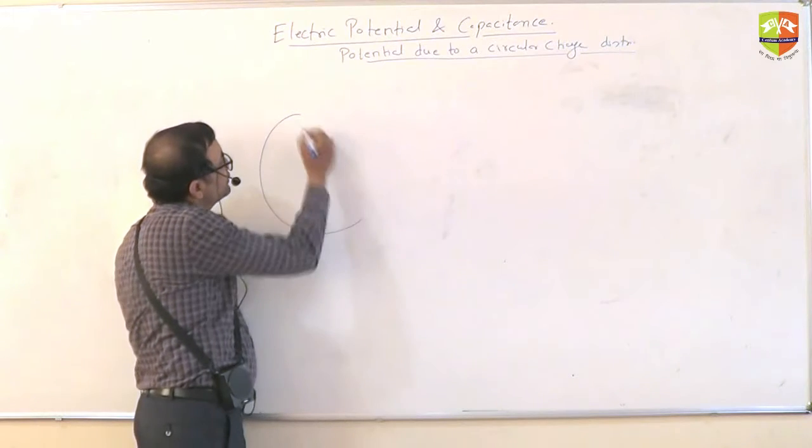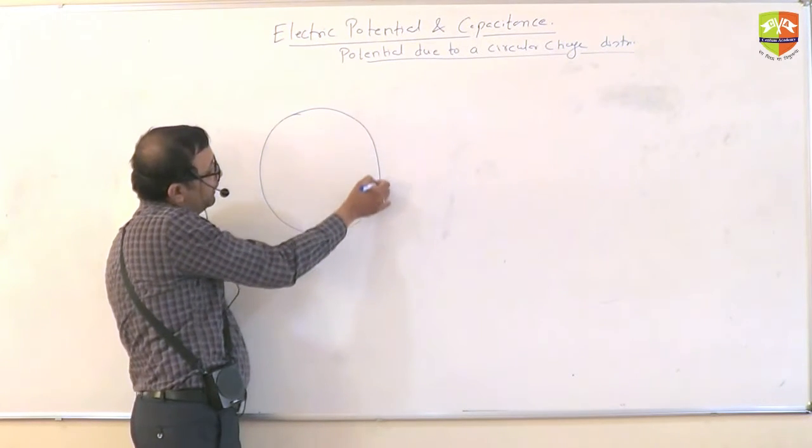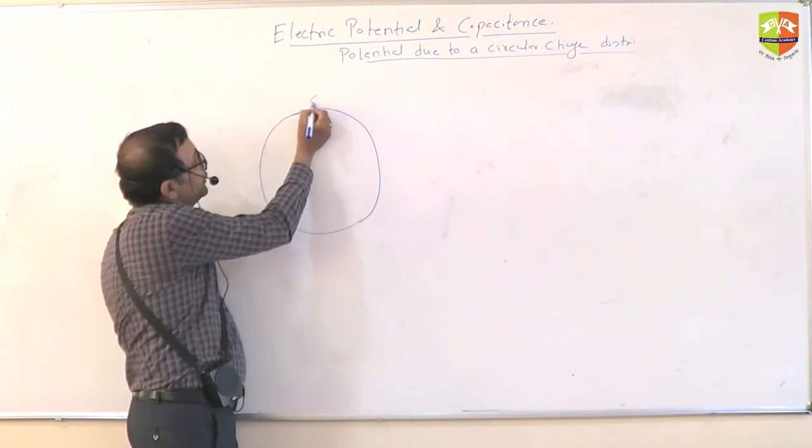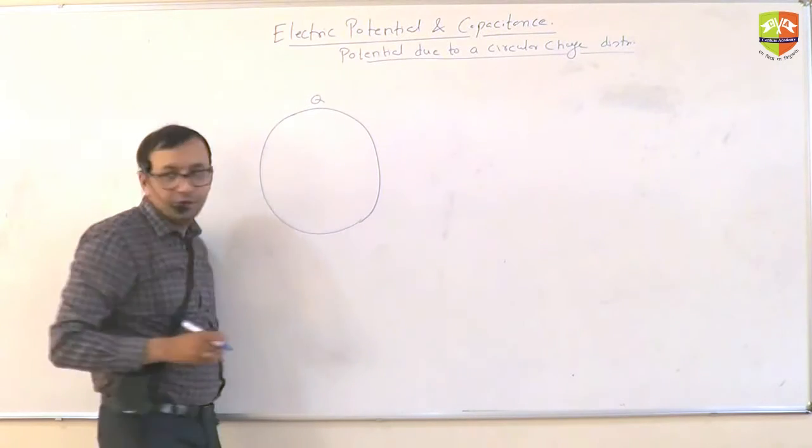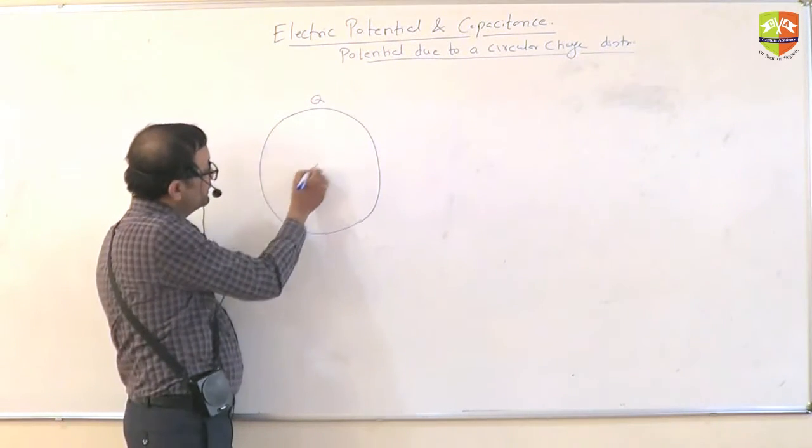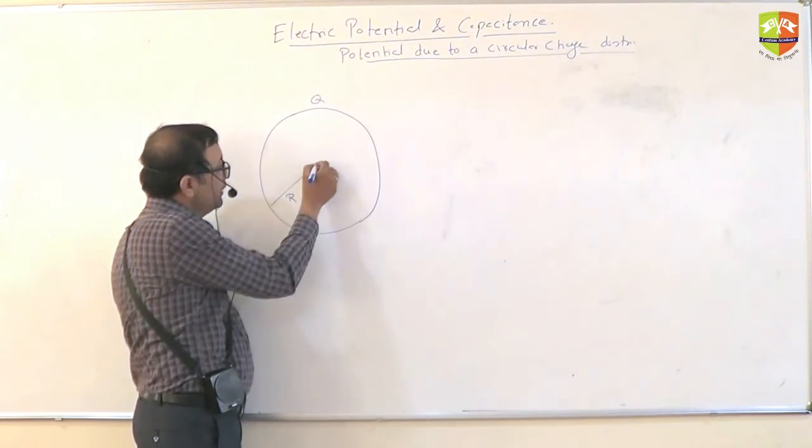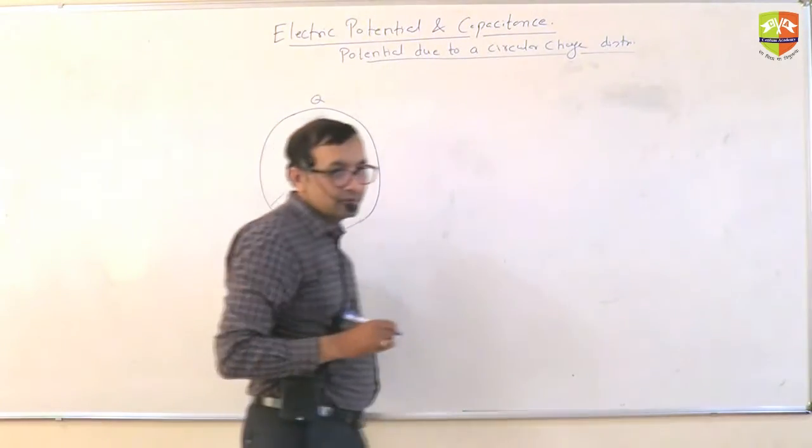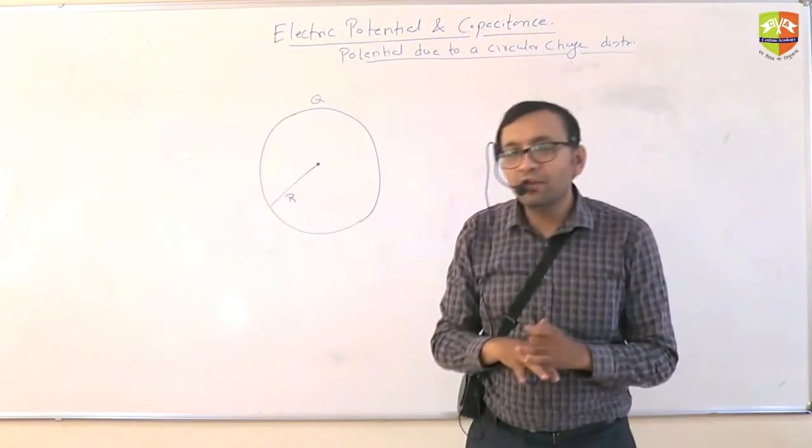Potential due to a circular charge. Now suppose Q charge is distributed on this ring. Q charge is uniformly distributed on the ring of radius R. You need to find potential at this point. By the way, potential is scalar or vector?